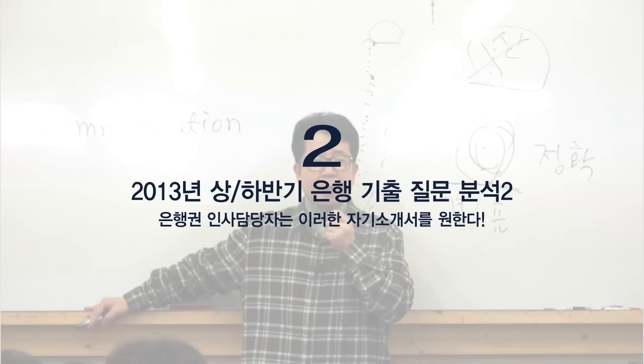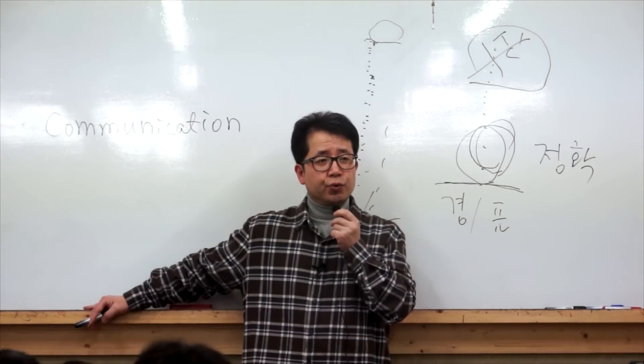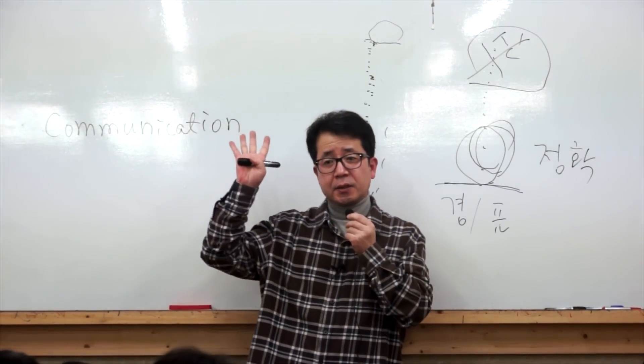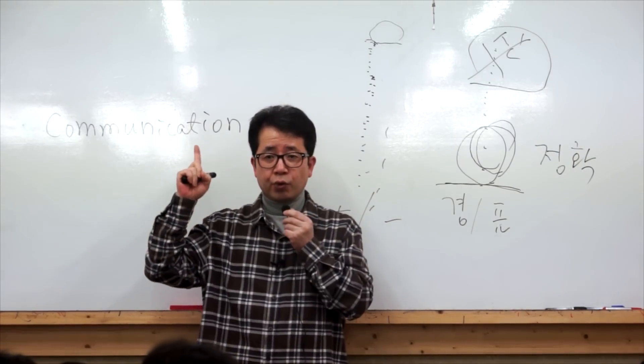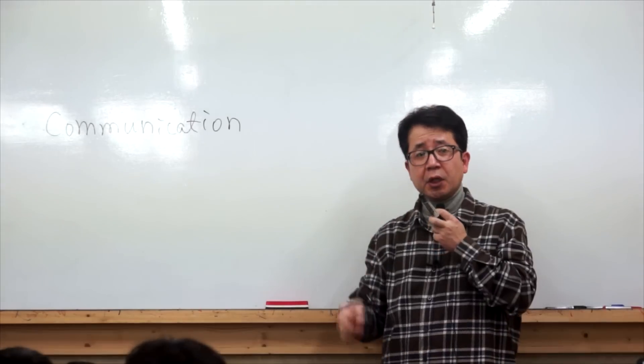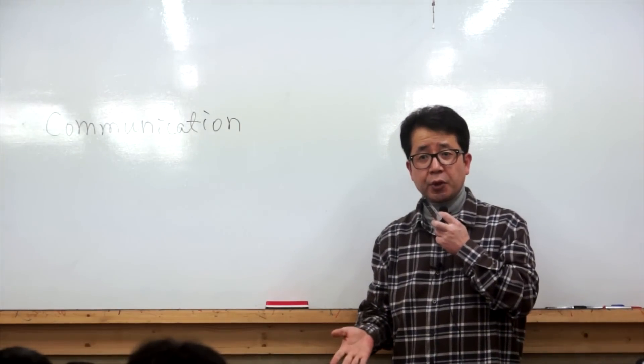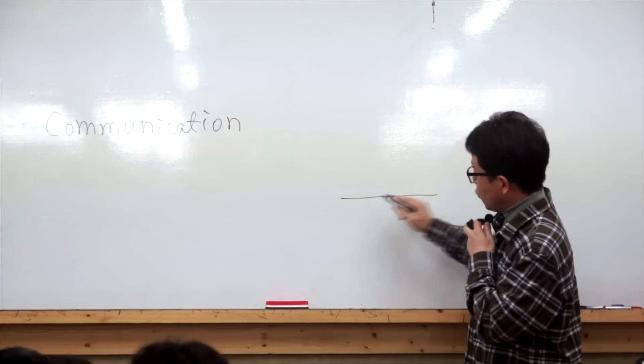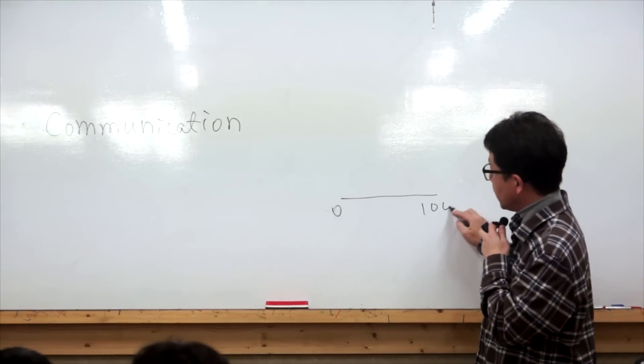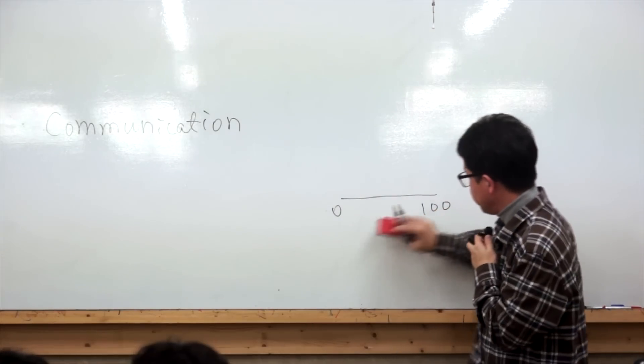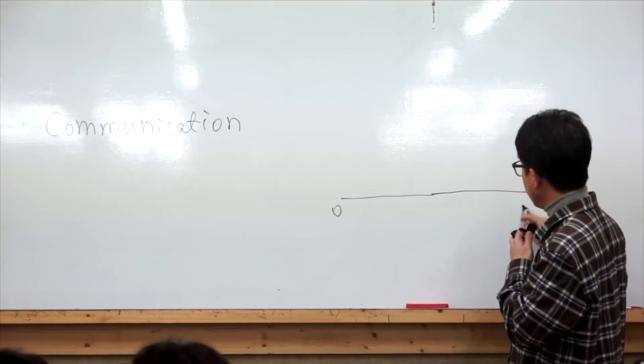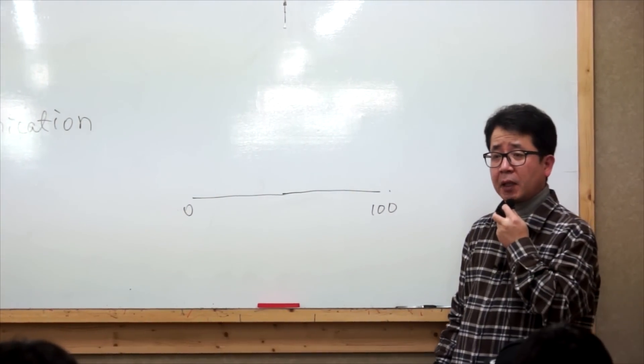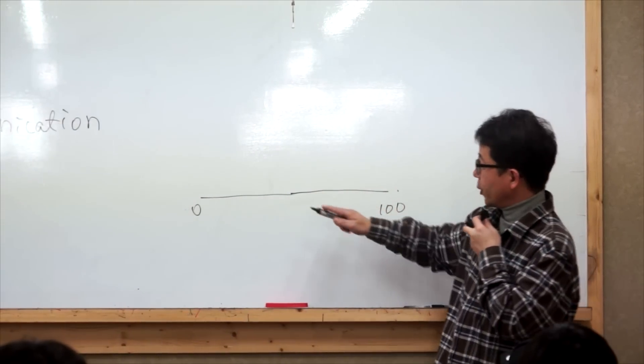The most important question is question number 2: Write about an experience where you were passionately immersed. For this question, if you look at the score distribution of 1,000 people, between 0 and 100 points, 100 points here, the distribution looks like this. This is question 2 about an experience where you were passionately immersed.